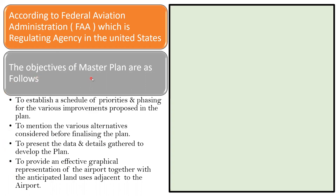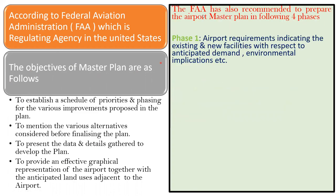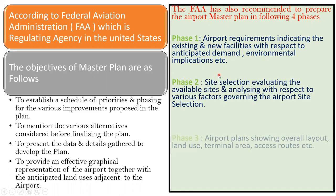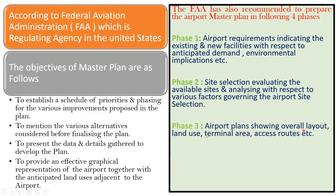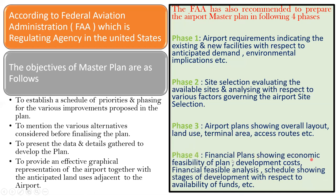The FAA has also recommended preparing the airport master plan in four phases. Phase one covers airport requirements — indicating existing and new facilities with respect to anticipated demand, environmental implications, etc. Phase two is site selection — evaluating available sites and analyzing them with respect to various factors governing airport site selection. Phase three is the airport plan — showing overall layout, land use, terminal area, access routes, and everything. Phase four is financial plans — showing economic feasibility, development cost, financial feasibility analysis, and a schedule showing stages of development with respect to availability of funds.